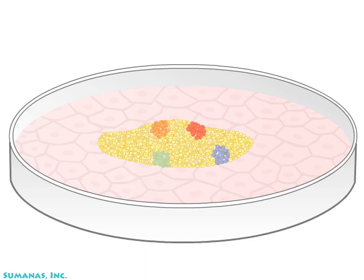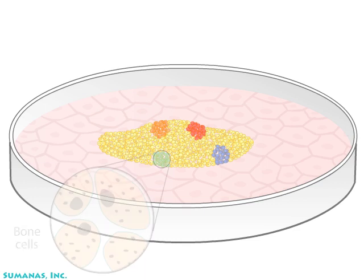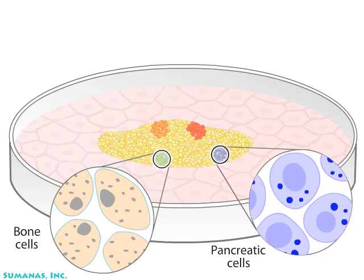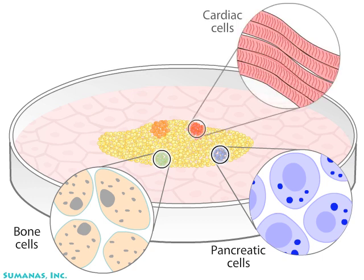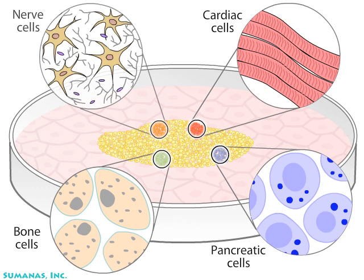Groups of cells may develop properties of mature bone cells or of pancreatic cells. Others develop into muscle cells that can contract, and still others into nerve cells. Because they have the potential to become such a wide variety of specialized cells, embryonic stem cells are described as pluripotent.